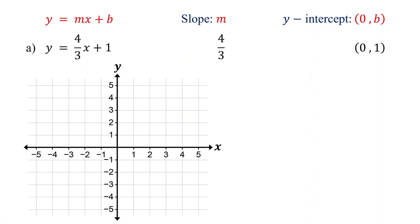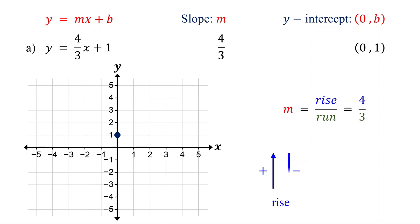Next, plot the y-intercept on the coordinate plane. The next step is to plot another point using the slope. Slope is rise over run, and in this case it is 4/3. The key concept to remember is that when the rise is positive, we move up. When it is negative, we move down. For our example, the rise is positive 4.